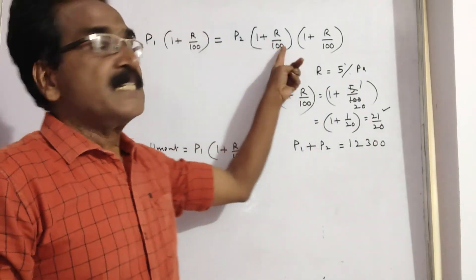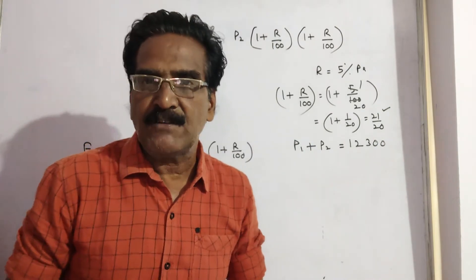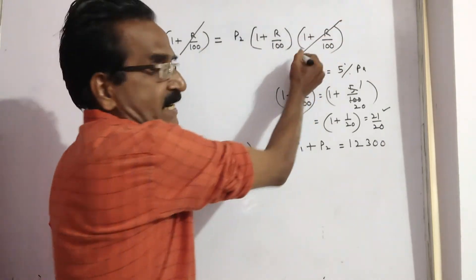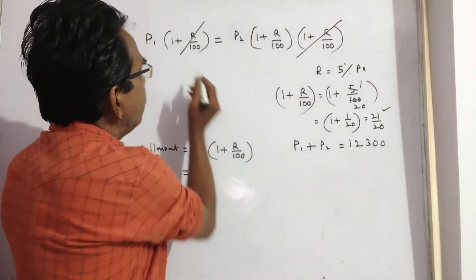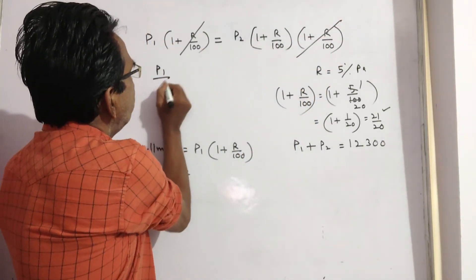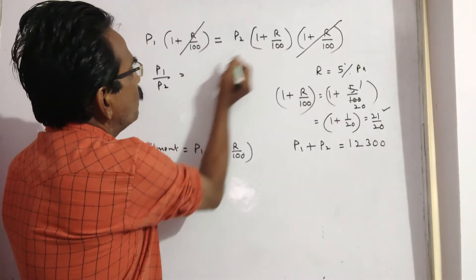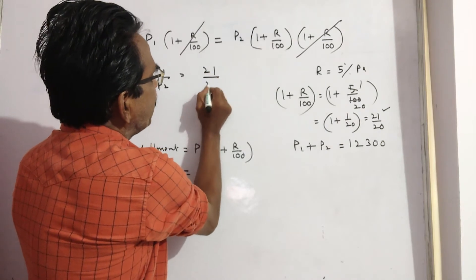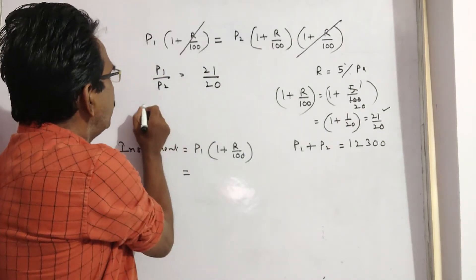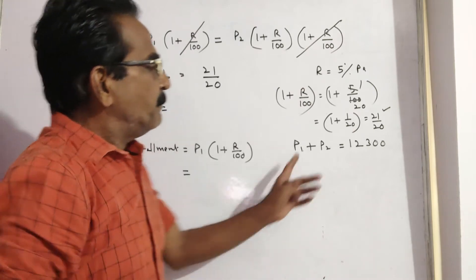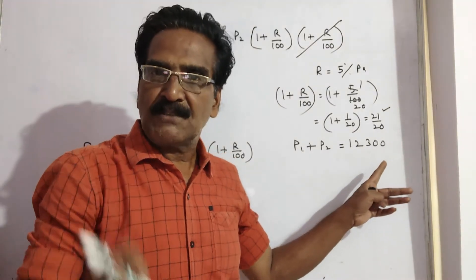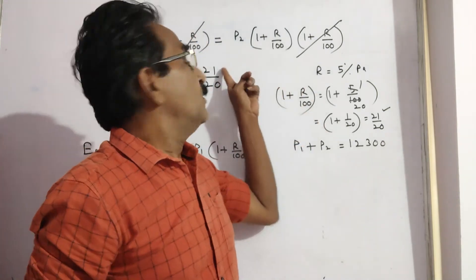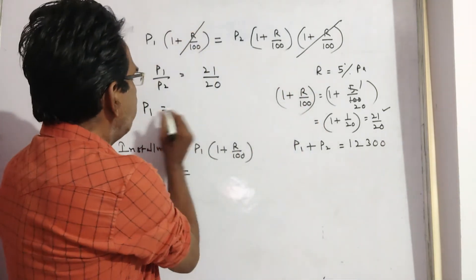Since these are two equal annual installments, the installment values are equal, so terms cancel and P1/P2 equals 1 + r/100, which equals 21/20. Now let us find P1. Since P1 plus P2 equals 12,300, we divide 12,300 in the ratio 21:20 to get P1.